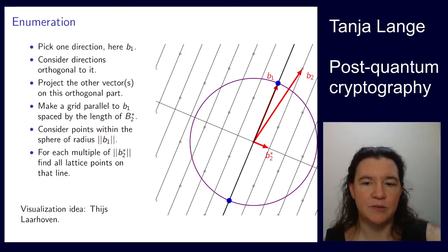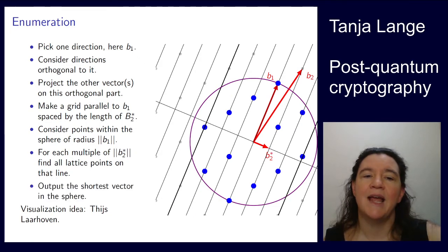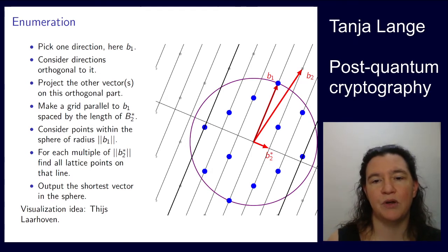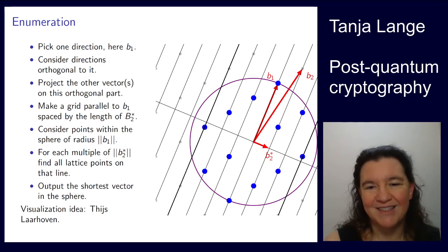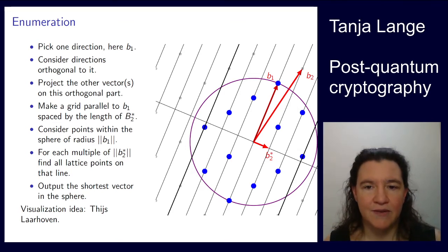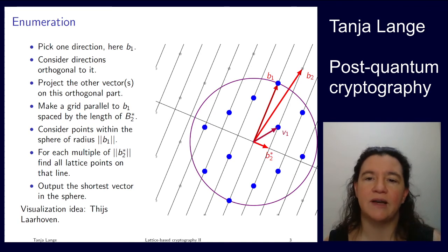So we're now looking at distance plus b2 star, also at 0 times b2 star, and finding b1 and minus b1—we know those already. Then we're looking at distance 1 times b2 star and we're finding those four blue dots on those lines. Then we're looking at 2 times the distance, 3 times the distance, and then we are already beyond what the circle is. So 4 times the distance would be outside the circle, so 3 times would be the largest we can do. Then out of these much smaller number of dots or vectors, we can output the smallest, so here we then do find v1.